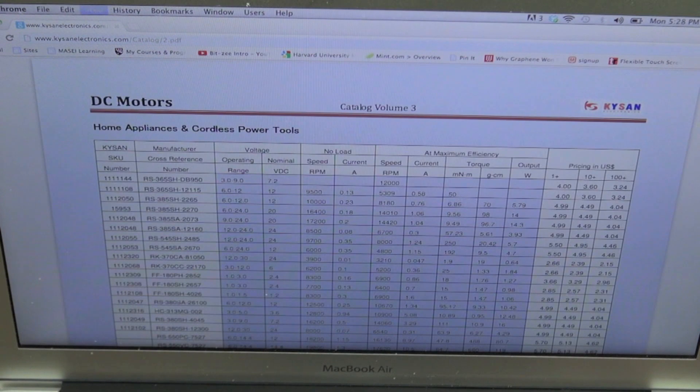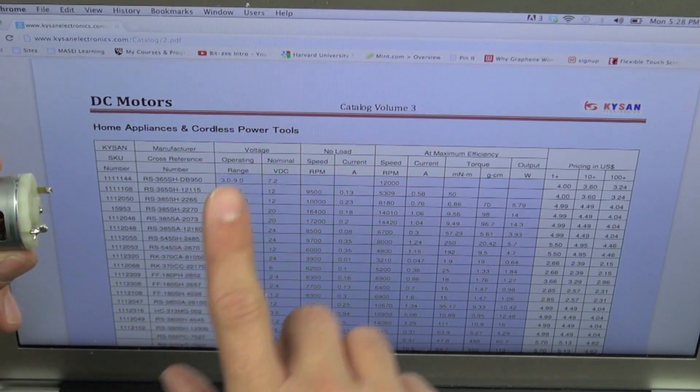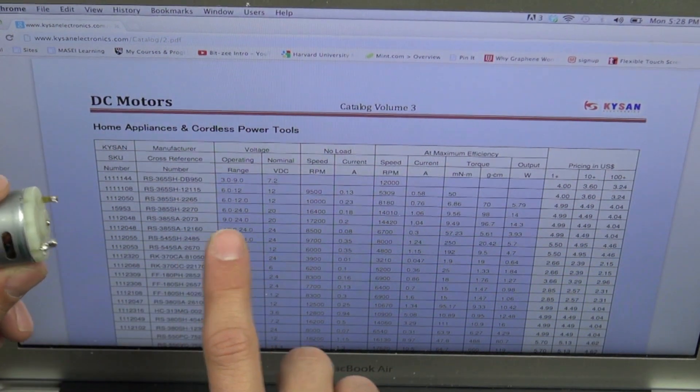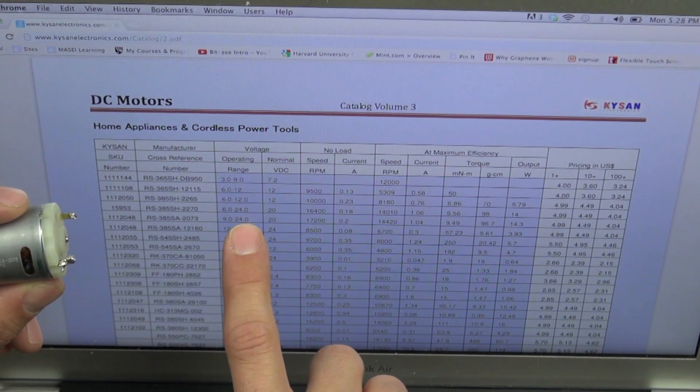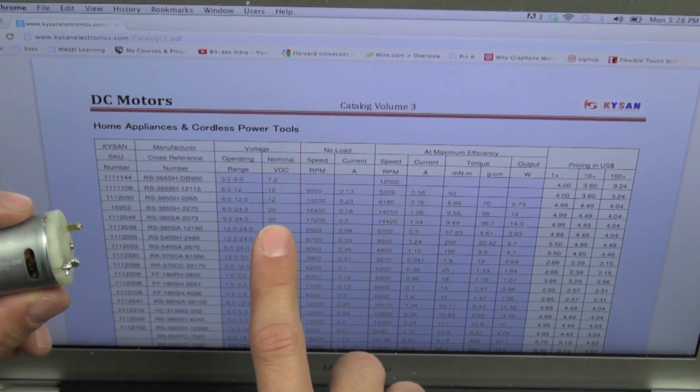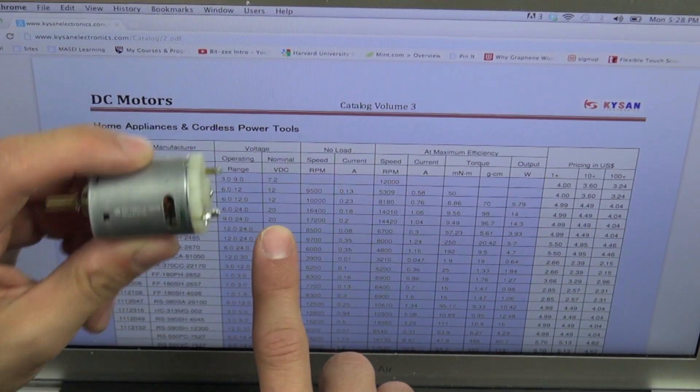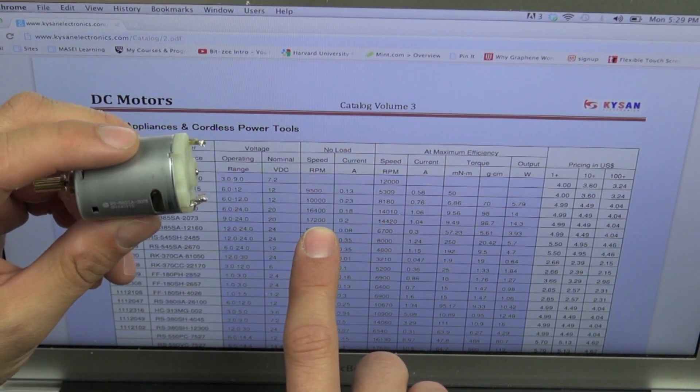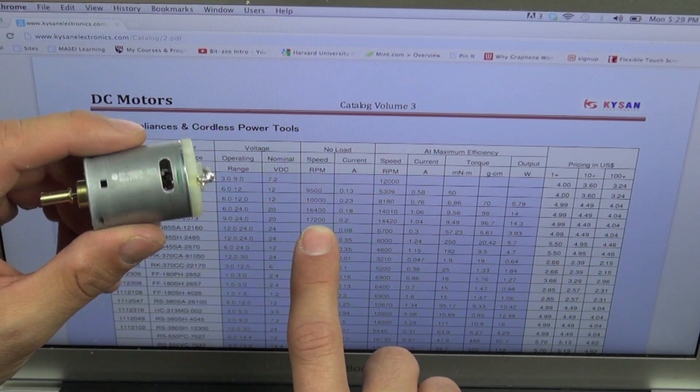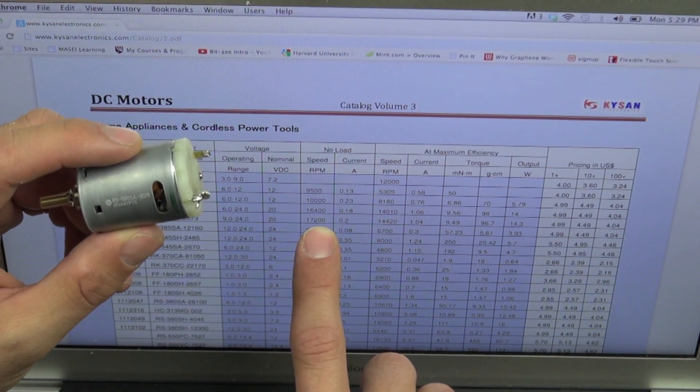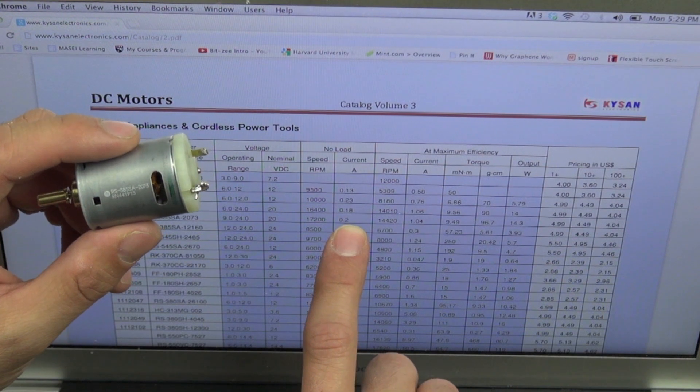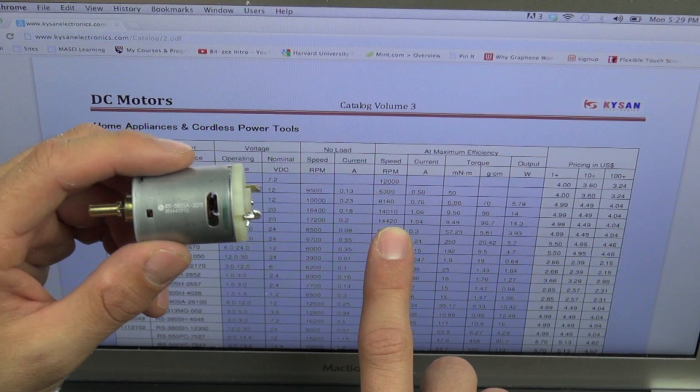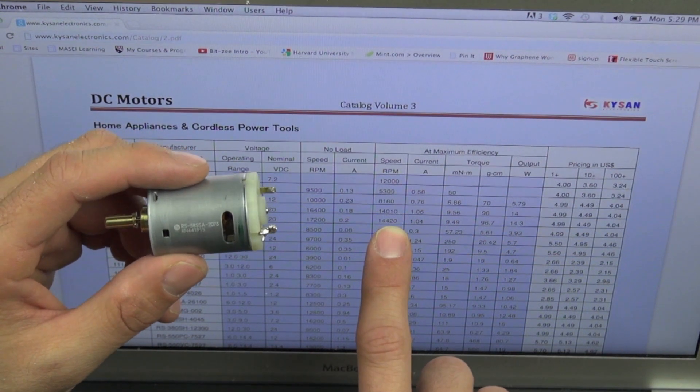Let's zoom in here for you. So RS 2073, okay this is our motor right here. Its operating range is 9 to 24 volts. Nominal voltage is 20 volts. With no load, its RPM will be 17,200 rotations per minute and it will take 0.2 amps. The speed at maximum efficiency is 14,420 and the current that it's going to take is 1 amp.